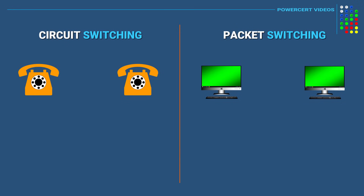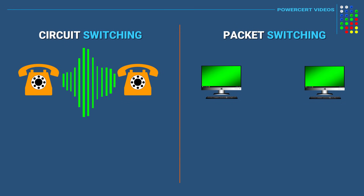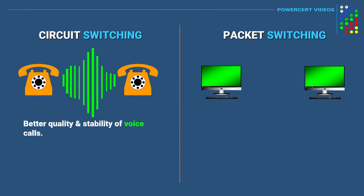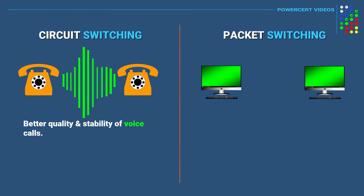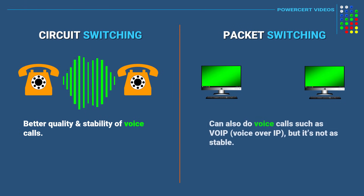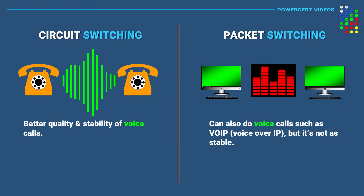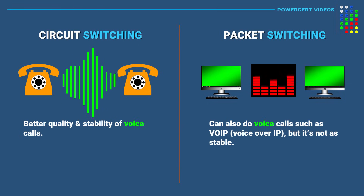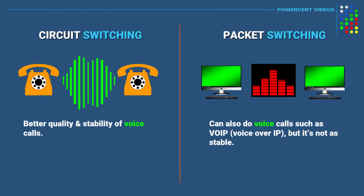So let's talk about some of the major differences between the two. In circuit switching, the quality and stability of the communication is better, which makes it better for voice calls. Now packet switching can also do voice data, which is known as VoIP or Voice over IP, but it's not as good as circuit switching.